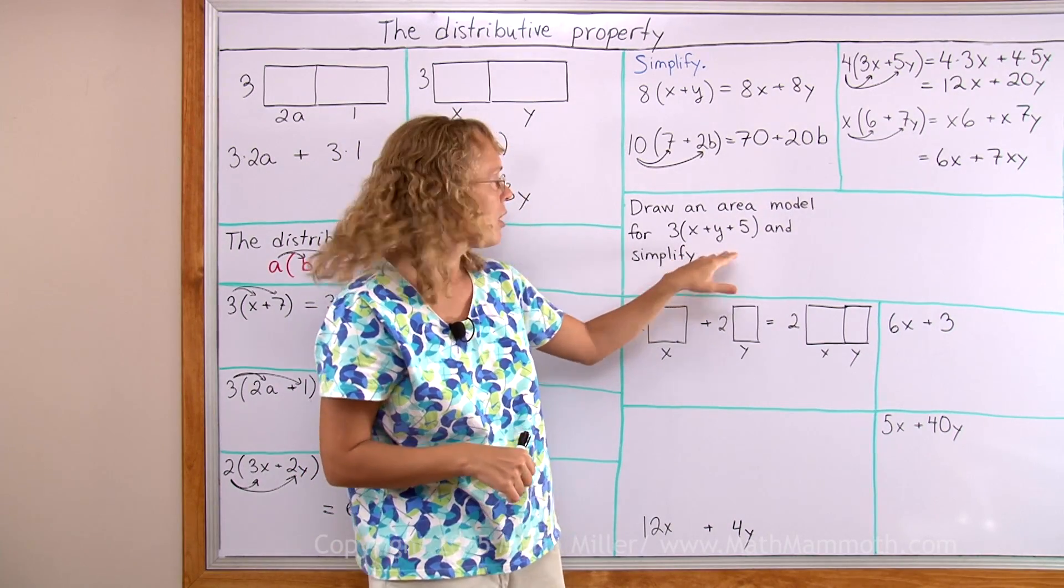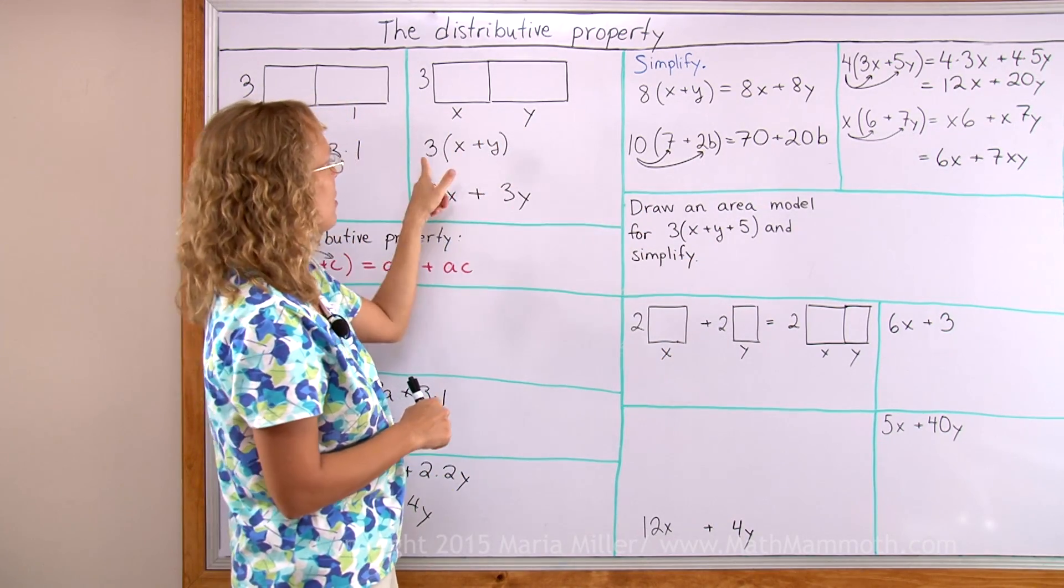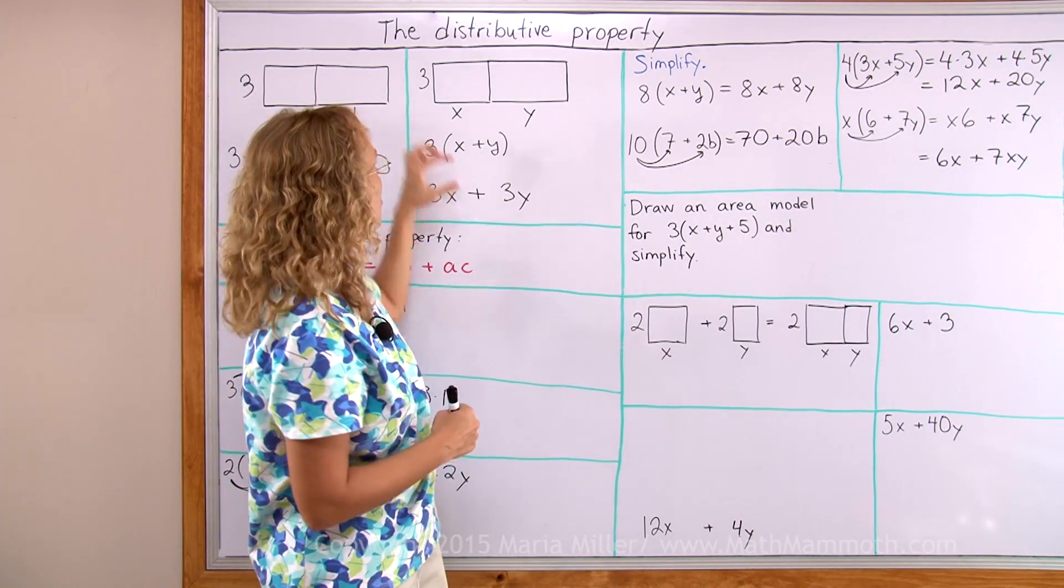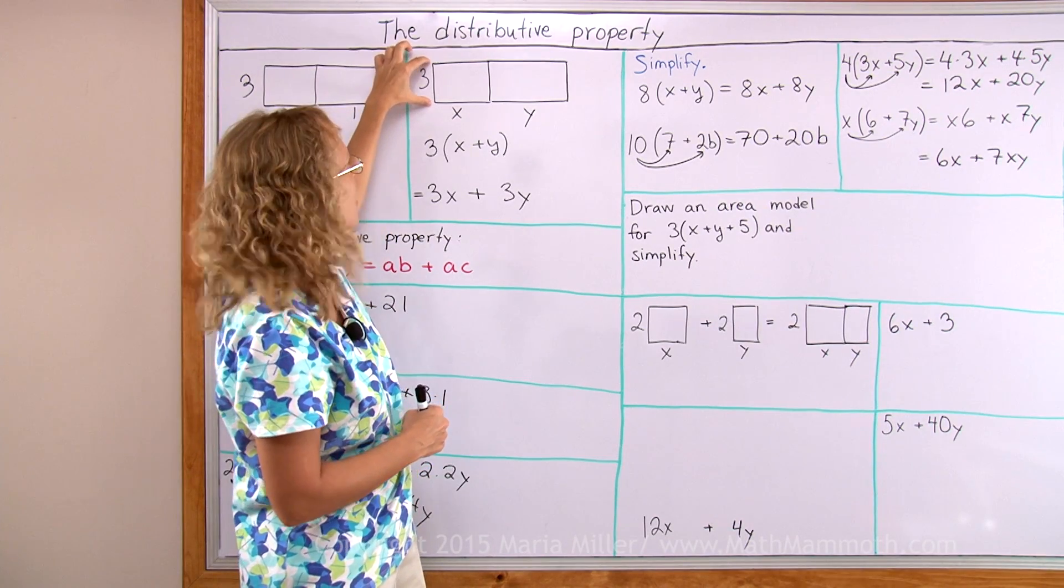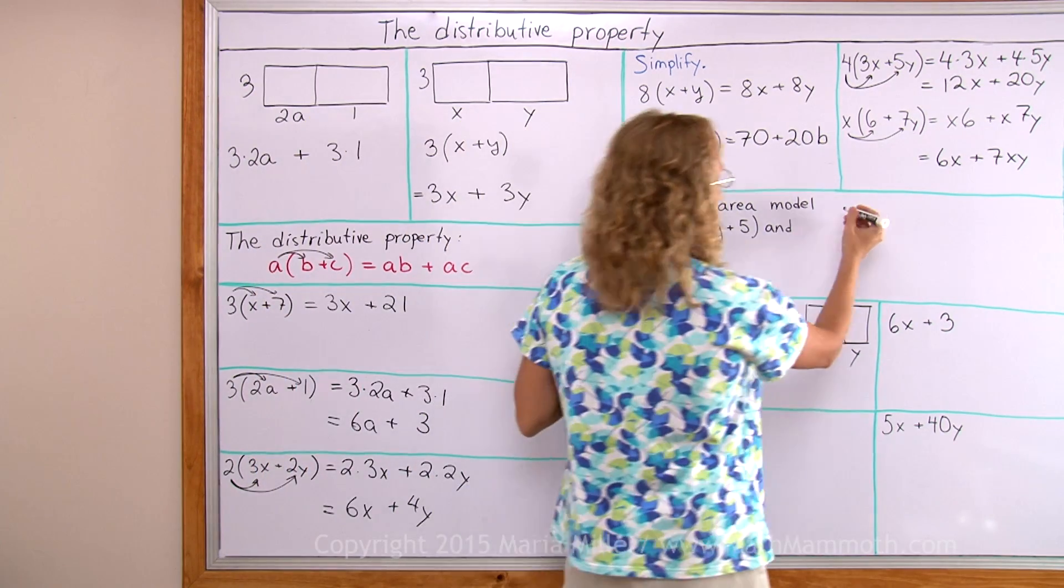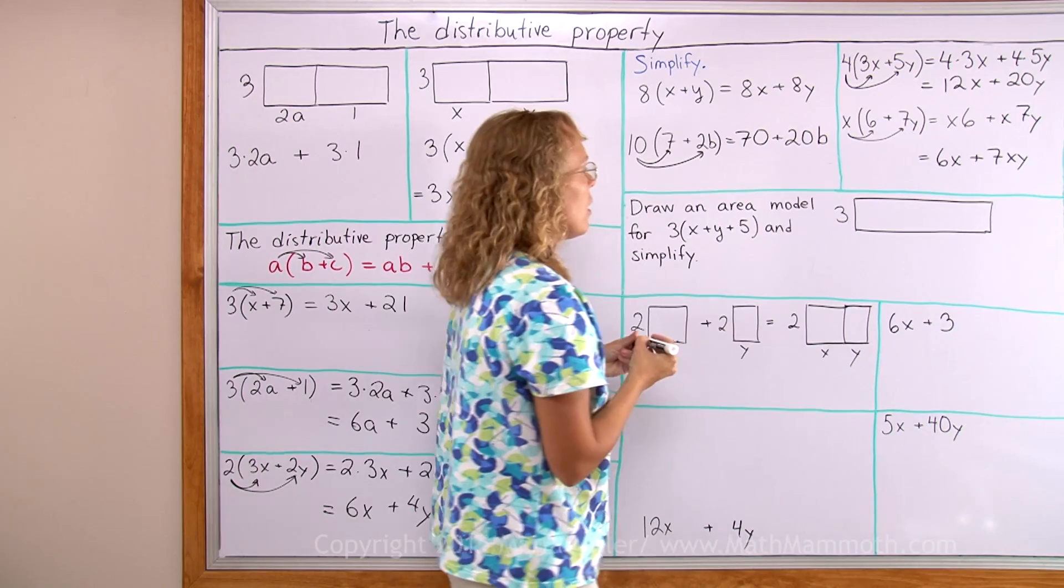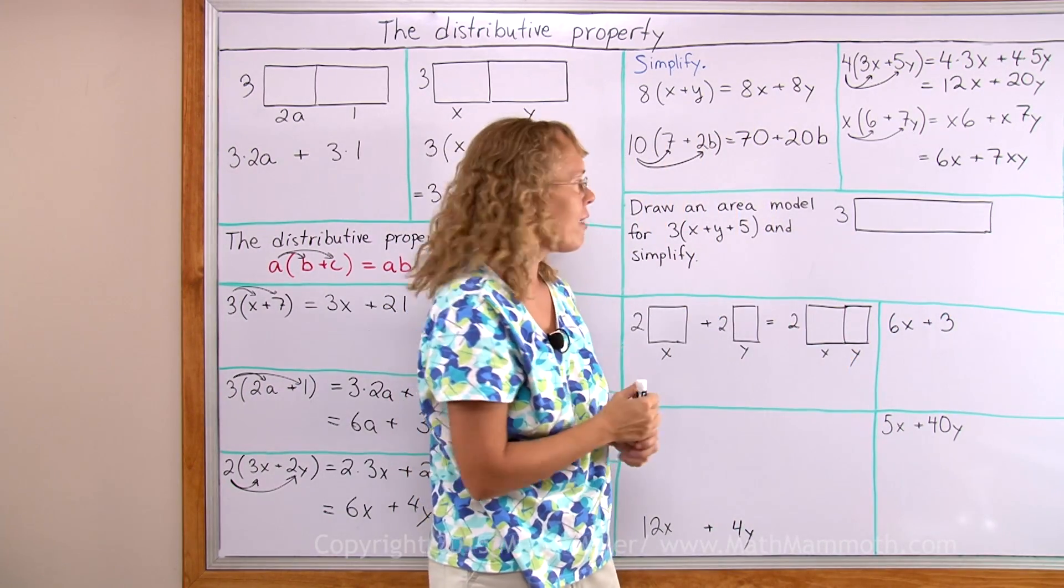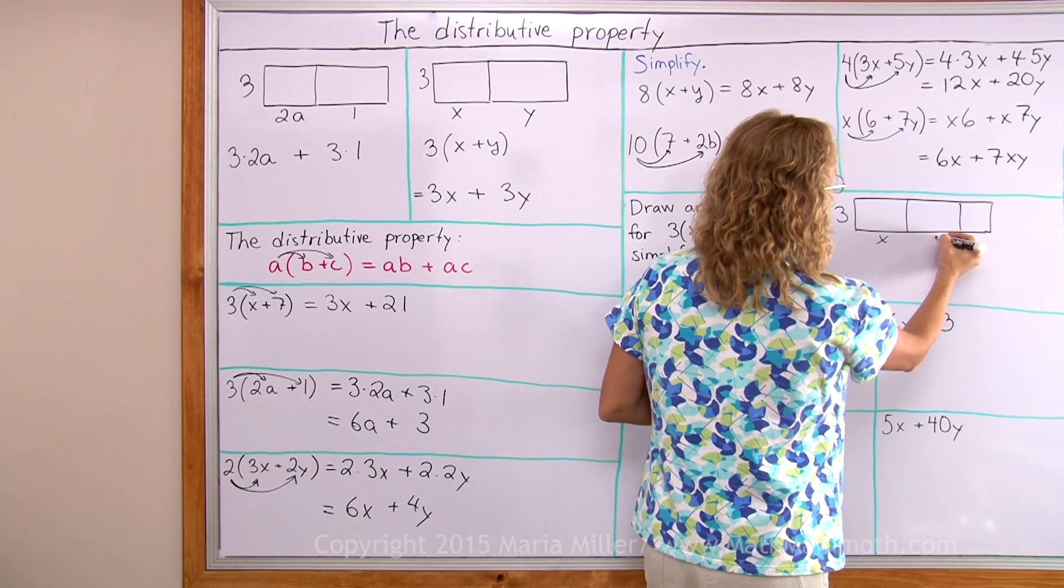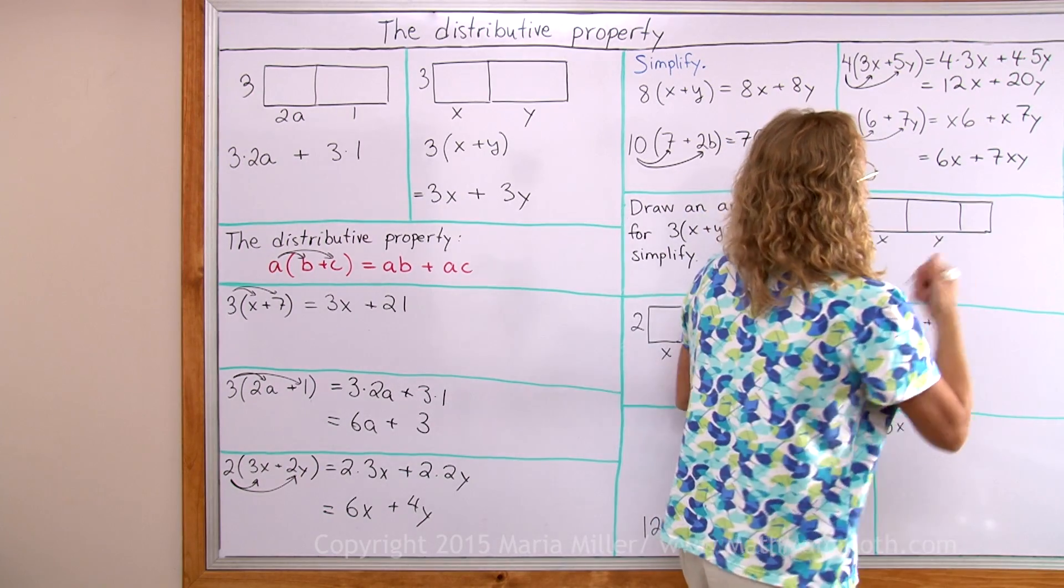Now here, draw an area model for this expression and then simplify. We're going to use this idea of rectangles. You see it is similar, it's pretty close to this one already. This 3 that is outside the parentheses will be our side length for this, the side that is the same in these. But this time we're going to have 3 different rectangles. And this side here is x plus y plus 5. So let's say that x is this long, y is that long, and that is 5. Here is my area model.